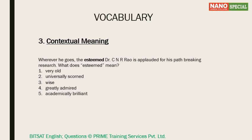Let us look at an example: 'Wherever he goes, the esteemed Dr. Siena Rao is applauded for his path-breaking research.' What does 'esteemed' mean? You can make out from this sentence that esteemed means held in great respect. Looking at the options, 'greatly admired' comes closest. Among the options, you've got 'scorned,' which is just the opposite — scorned means expressing disgust and anger. So this is contextual meaning.